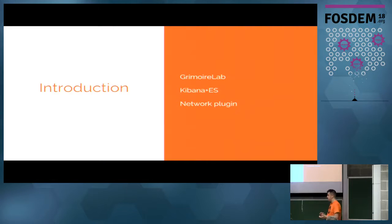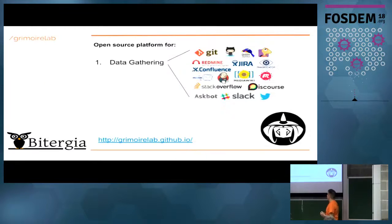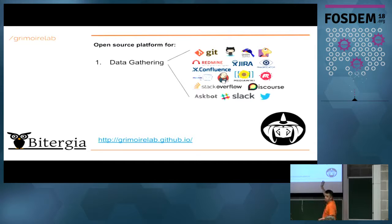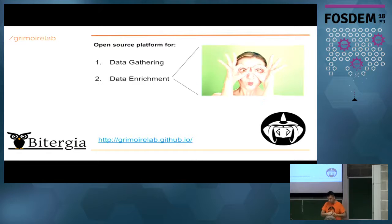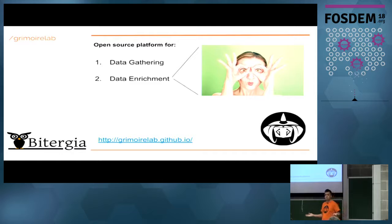The first step is to get the data — how we can get data about our community. I'm going to introduce you to Grimoire Lab. Grimoire Lab is a free open source platform for software development analytics. It's a platform for data gathering from data sources like Git, GitHub, Jira, Slack, and so on. It also handles data enrichment like affiliations and merging identities — for example, one person can have a Google account and a Microsoft account, but they're the same person, so we can merge these two identities into one.